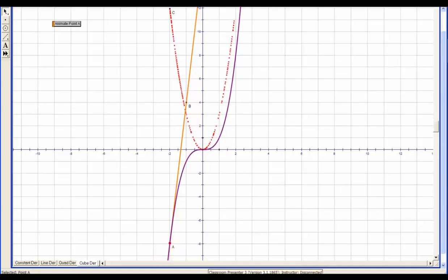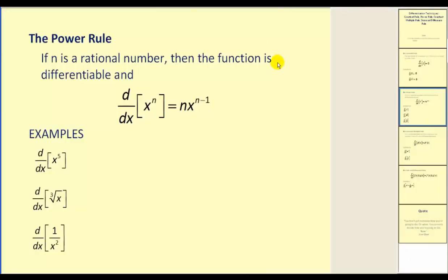So we kind of see a pattern here. Let's summarize: the power rule. If n is a rational number, then the function is differentiable and the derivative of x to the power of n with respect to x is equal to n times x to the power of n minus one. To find the derivative, we multiply by our current exponent and then subtract one from the exponent. We saw the degree of the functions we graphed decrease by one when we found its derivative — this rule does verify the patterns that we saw. Of course, we could prove this formula using the limit definition of derivative; if you look at any calculus textbook, most of the proofs will be in there.